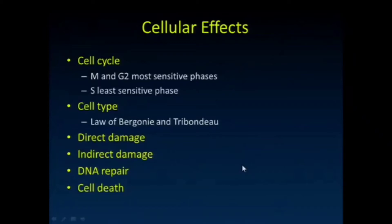I want to talk about radiation biology, and mostly how it pertains to how those risks in that table were set. Some of them were set based on experimental data — how sensitive are tissues to radiation in the lab — but there are also some general rules.